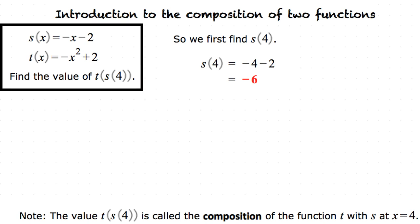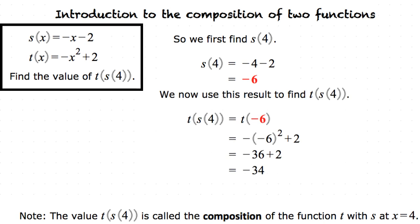Now that we have the value of s(4) which is -6, we then plug in the value into our other function t(x). Plugging -6 into the function we are left with -(-6)² + 2 which simplifies to -36 + 2 which again simplifies to -34.